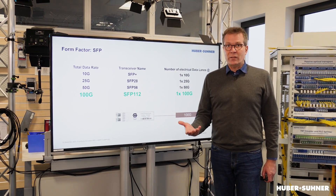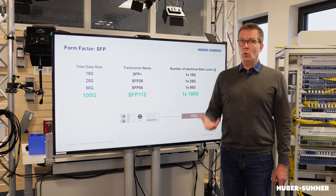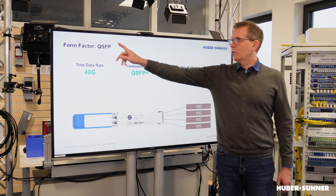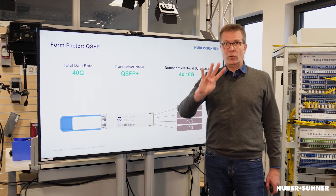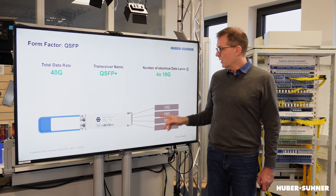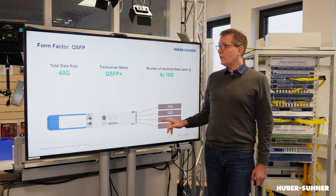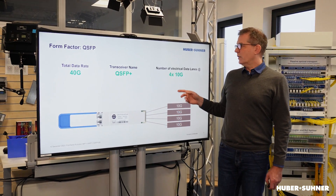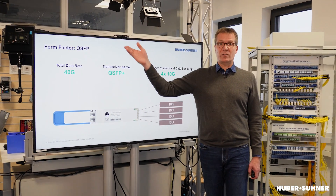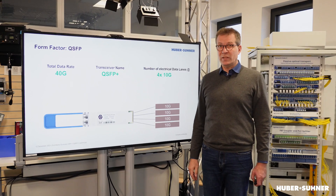If we need even higher data rates than 100 Gbps, that's when we need QSFP. The Q stands for quadruple — so four times a comparable infrastructure. That means now we're talking about four electrical lanes, and each of which can carry 10 Gbps. So QSFP Plus delivers a net total data rate of 40 Gbps.